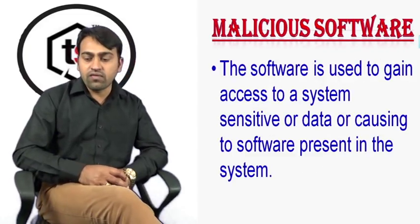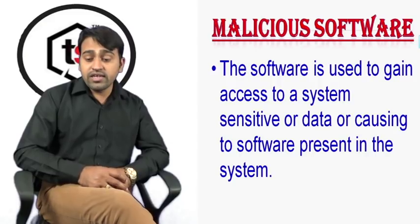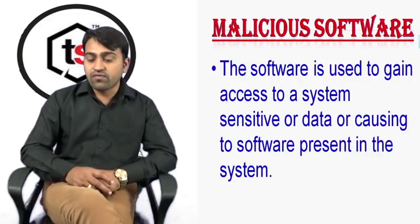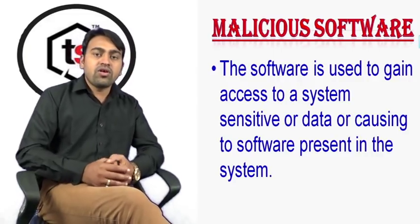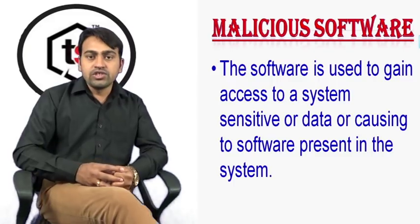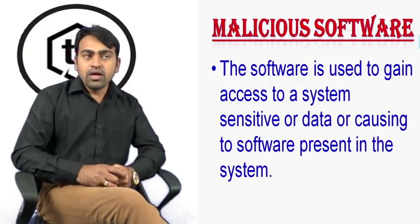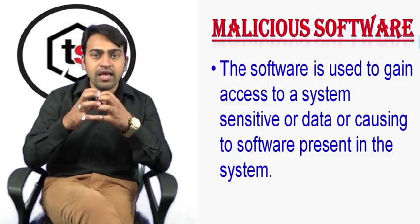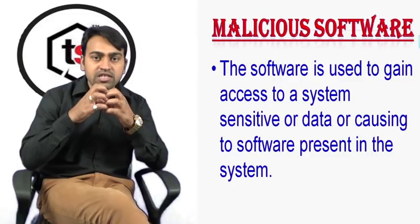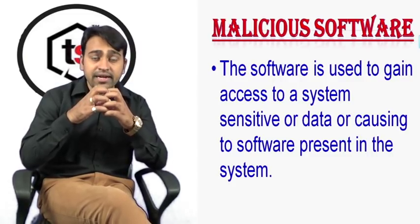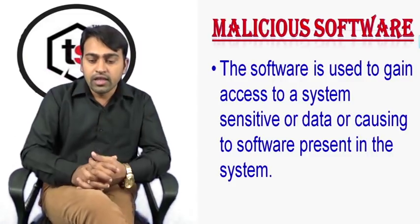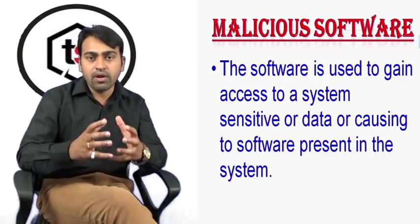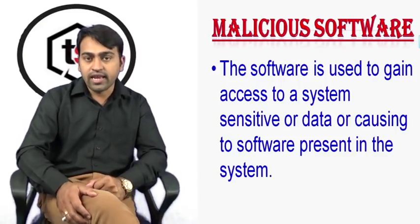Next is malicious software. This software is used to gain access to a system and corrupt sensitive data present in the system. Malicious software can disrupt any network or device. Once a malicious network is created, the criminal can turn the network against the victim. Malicious software operates by connecting between infected systems and is used to cause problems by bringing systems together under criminal control.